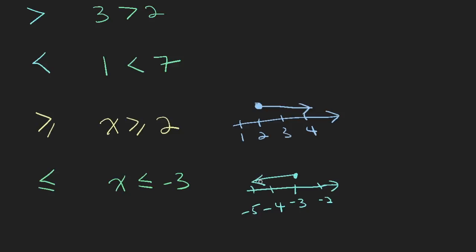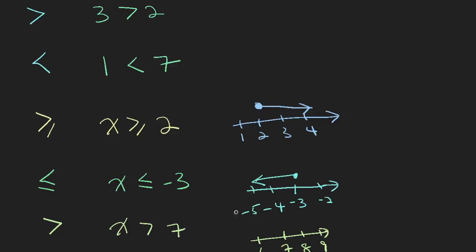So when you have a strict greater than, and if x is greater than 7, your number line will look like this: 6, 7, 8, 9. And because this is greater than without equals, it is not inclusive of 7, so we use a circle to notate it.